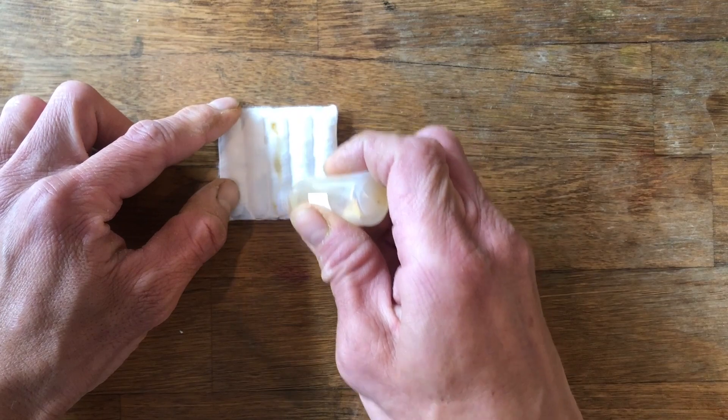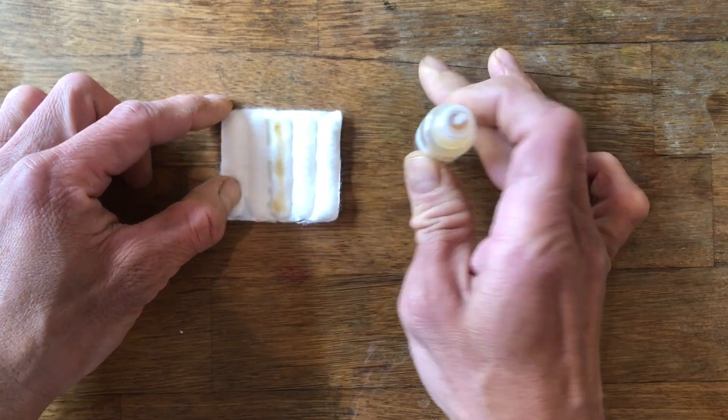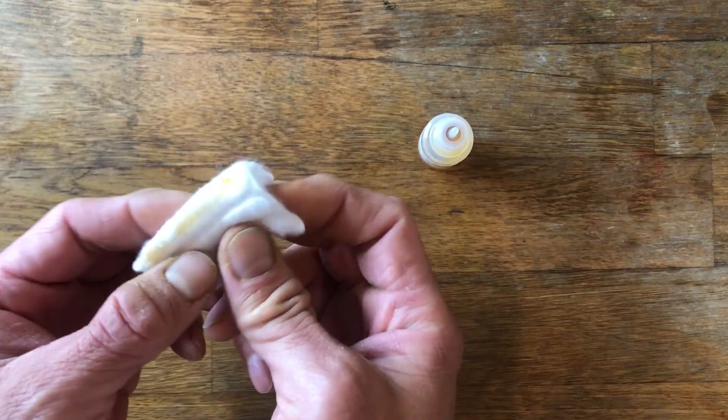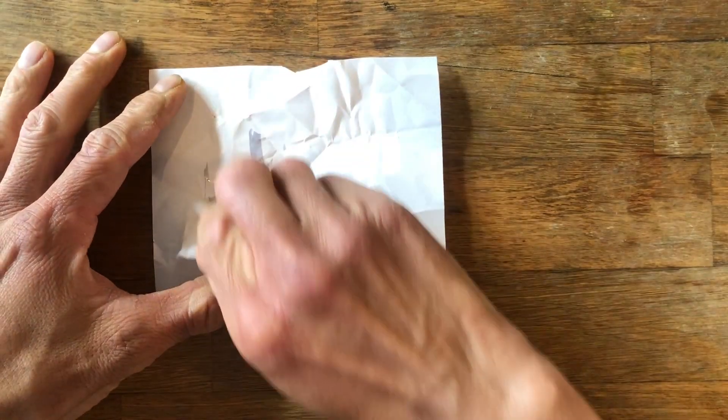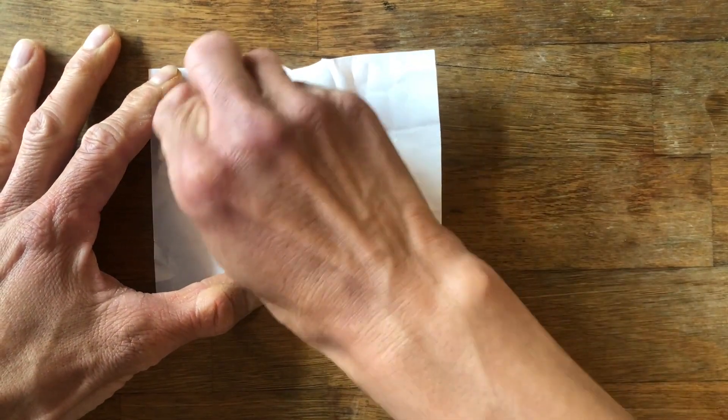You can get iron sulfate solution from iron supplements or ferrous sulfate tablets. Apply the iron sulfate solution to a cotton ball or cotton square and rub it to reveal the hidden message.